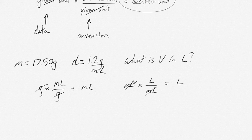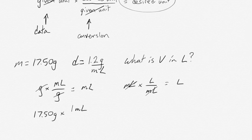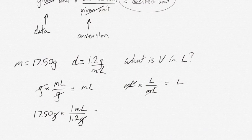This is our process. We start with 17.50 grams. Multiply it by 1 milliliter for every 1.2 grams from our density. Grams cancel. And we are left with 14.583 repeating milliliters.